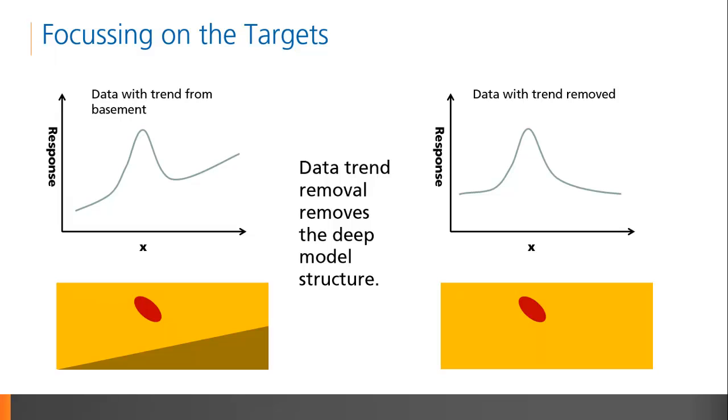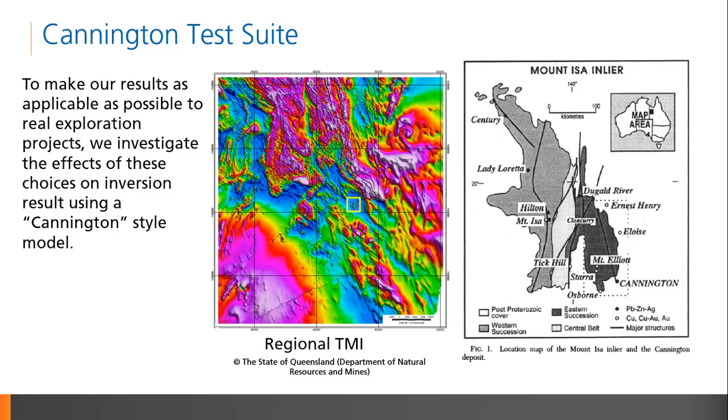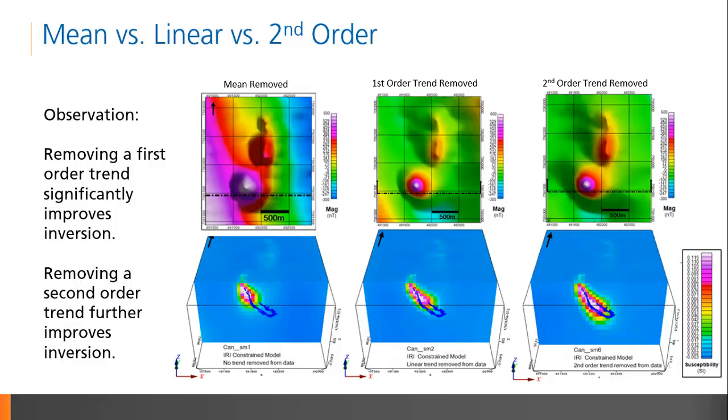Removing the trend due to the basement structure makes it easier to interpret the response. Similarly, removing a trend from the data improves the inversion's ability to resolve the target body. We apply this to a real dataset using the Cannington deposit in Queensland, Australia. Active mining and drilling in the area have defined the structure of the deposit quite well. The dark blue shape outlined in each of these models is the known outline of the Cannington deposit. The TMI data was inverted with a mean trend, a linear trend, and a quadratic trend removed. We see that the inversion result is improved significantly with even a simple linear trend removal. A second order trend improves the result further. We can resolve the depth extent and the dip of the deposit far better. And that's because the inversion can focus its efforts on modeling the target bodies instead of outside contributors.